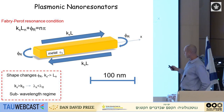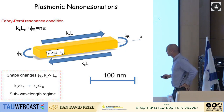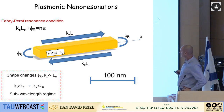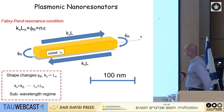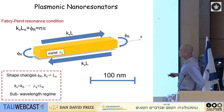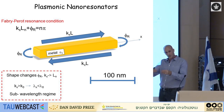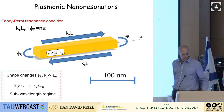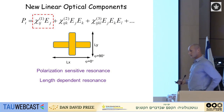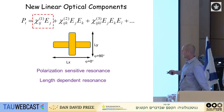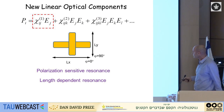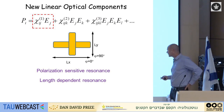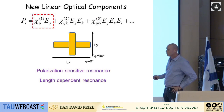Now I move to the second atom: plasmonic nanoresonators. John Pendry talked about plasmonics — we can excite coupled electromagnetic-electron oscillations on metal, and depending on the shape, the wavelength can be shorter than in air, so truly nanometric particles allow resonant Fabry-Perot modes. By changing the length we can tune the interaction with light very well. If we take a cross shape with one length in one direction and another length in the other direction, we get an anisotropic interaction between E and P — a polarization-sensitive, length-dependent resonance.